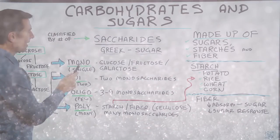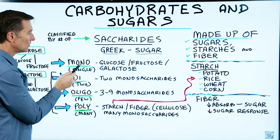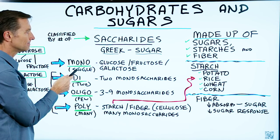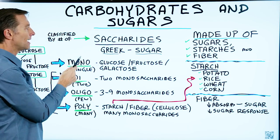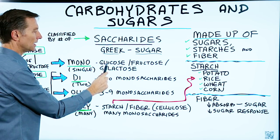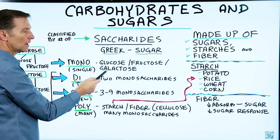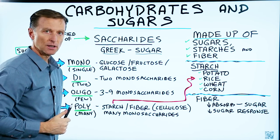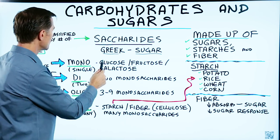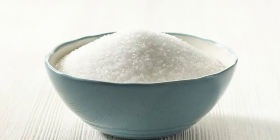Now we have monosaccharides. Mono means single or one, so a monosaccharide would be one saccharide unit. That would be glucose, fructose, or galactose. This would be considered a simple sugar. You also have dextrose and others, but I'm going to keep it fairly basic.